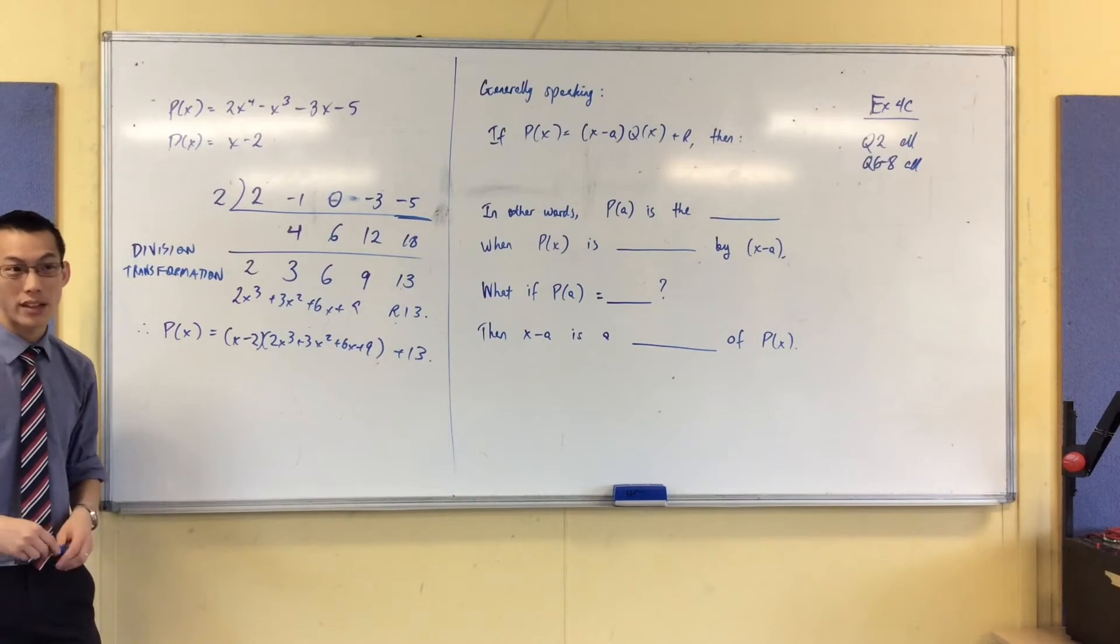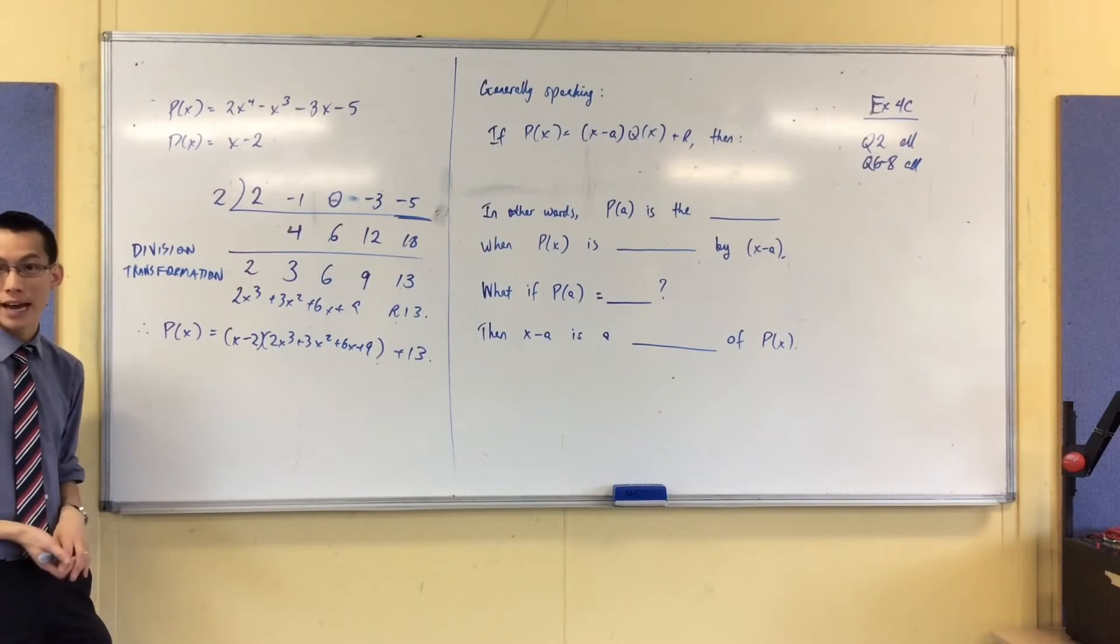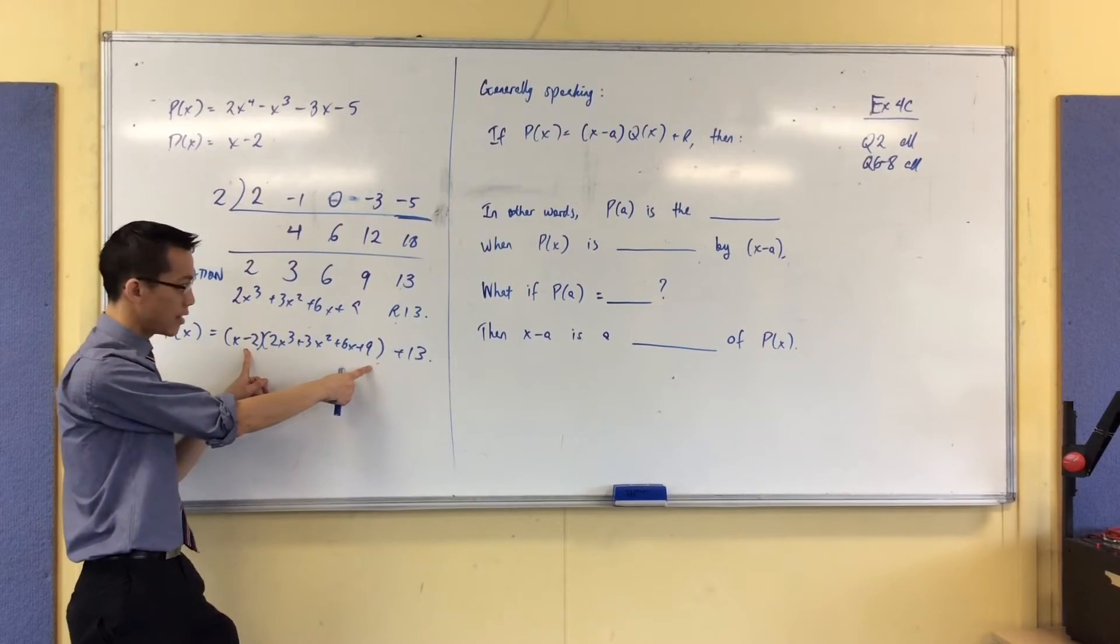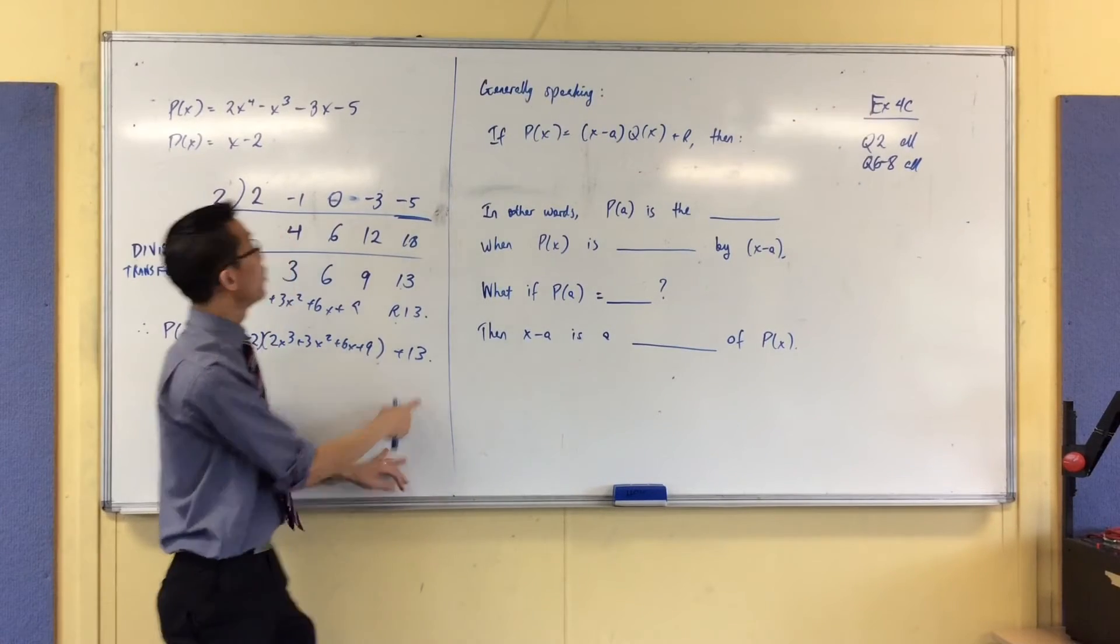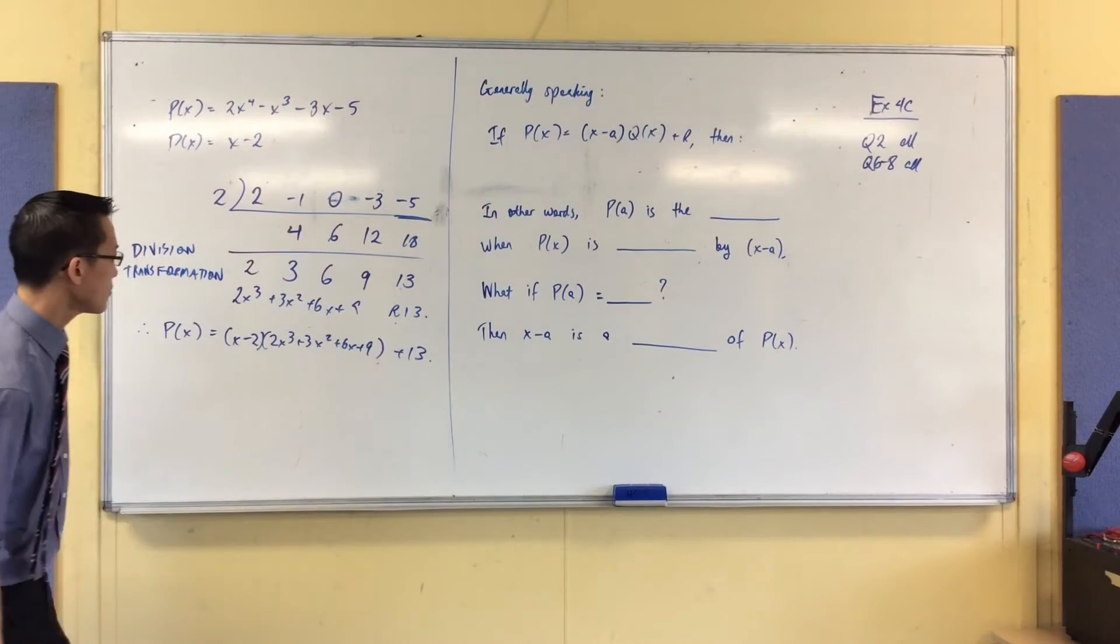Again, I can very quickly confirm that I did it right, because when you have a look at the only constant term you're going to get out of this, it's going to be negative 2 times 9, which is negative 18, and then I add 13, which gives me the negative 5 I'm supposed to get. Are you happy with that?